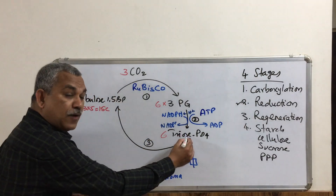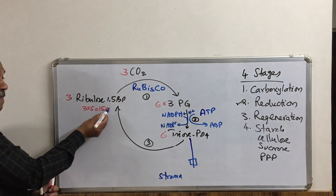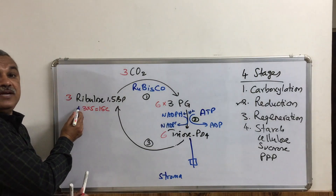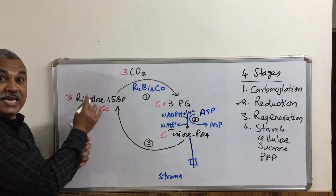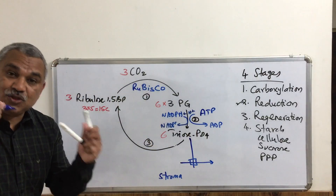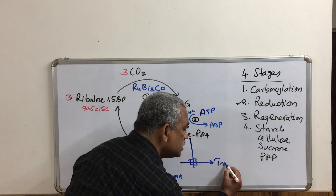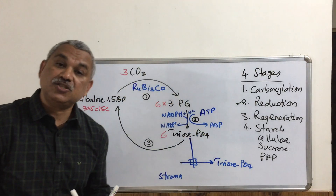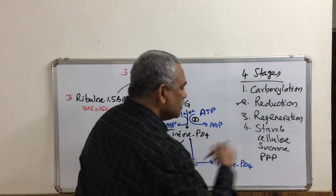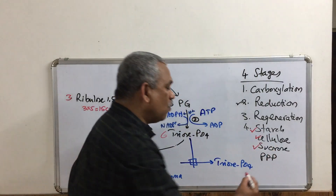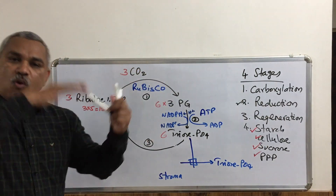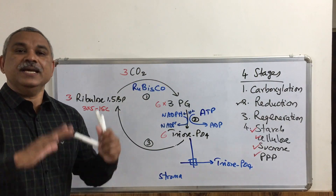Five of the six triose phosphate molecules are converted back into three molecules of ribulose 1,5-bisphosphate — that is 5 × 3 = 15 carbon atoms regenerated. The remaining one triose phosphate (three carbon atoms) is transferred to the cell cytoplasm, where it is converted to starch, cellulose, sucrose, or intermediates of the pentose phosphate pathway. This is the overall outline of carbon fixation in the Calvin cycle.